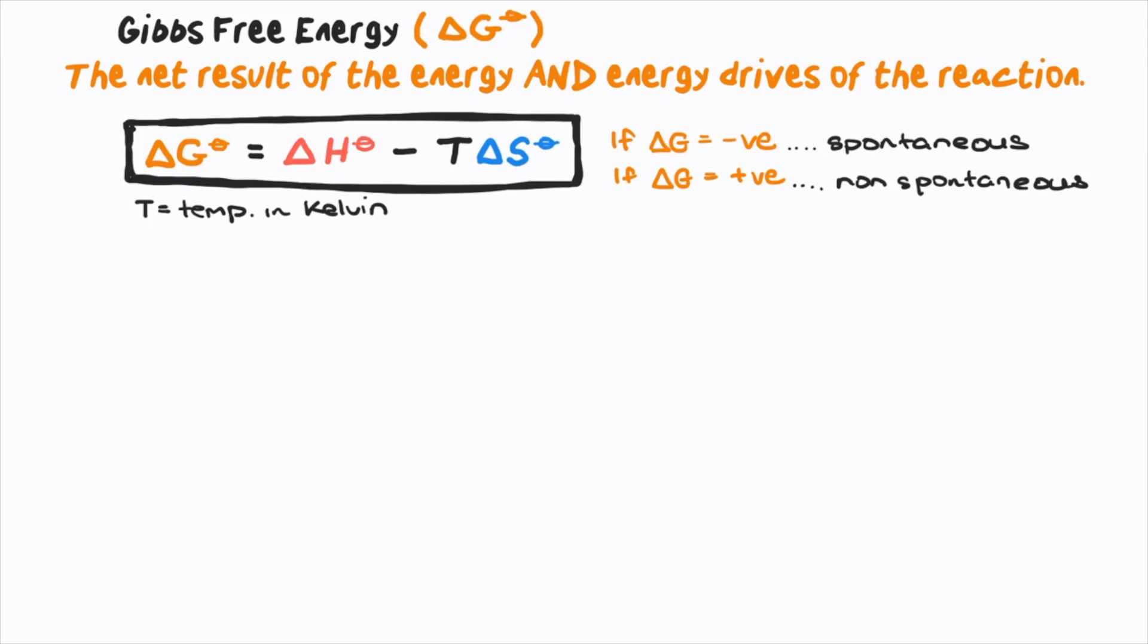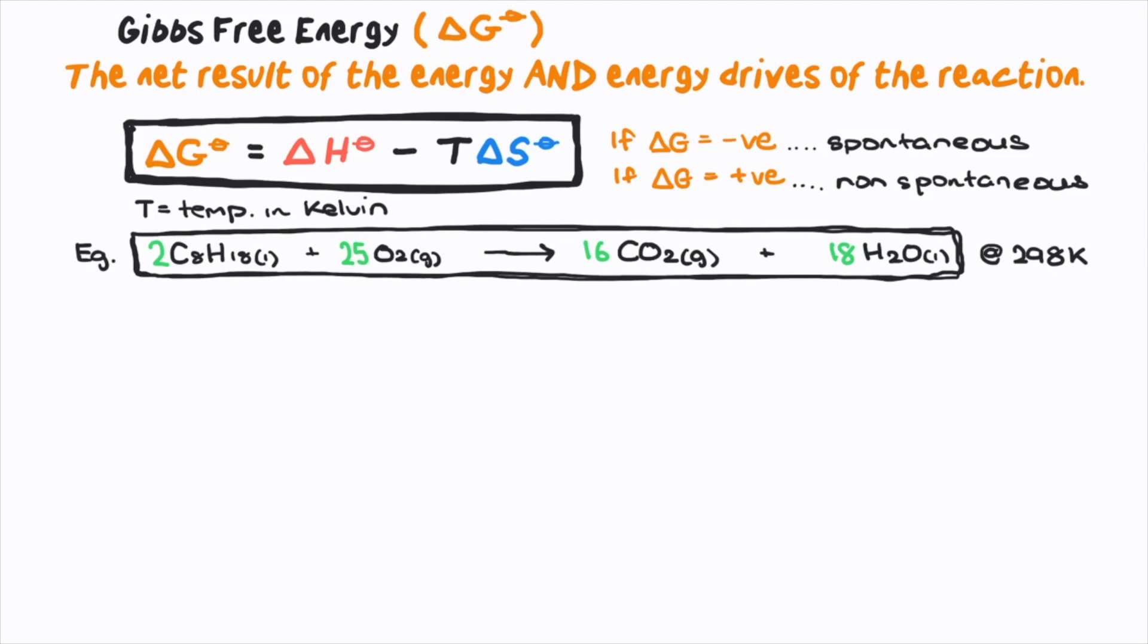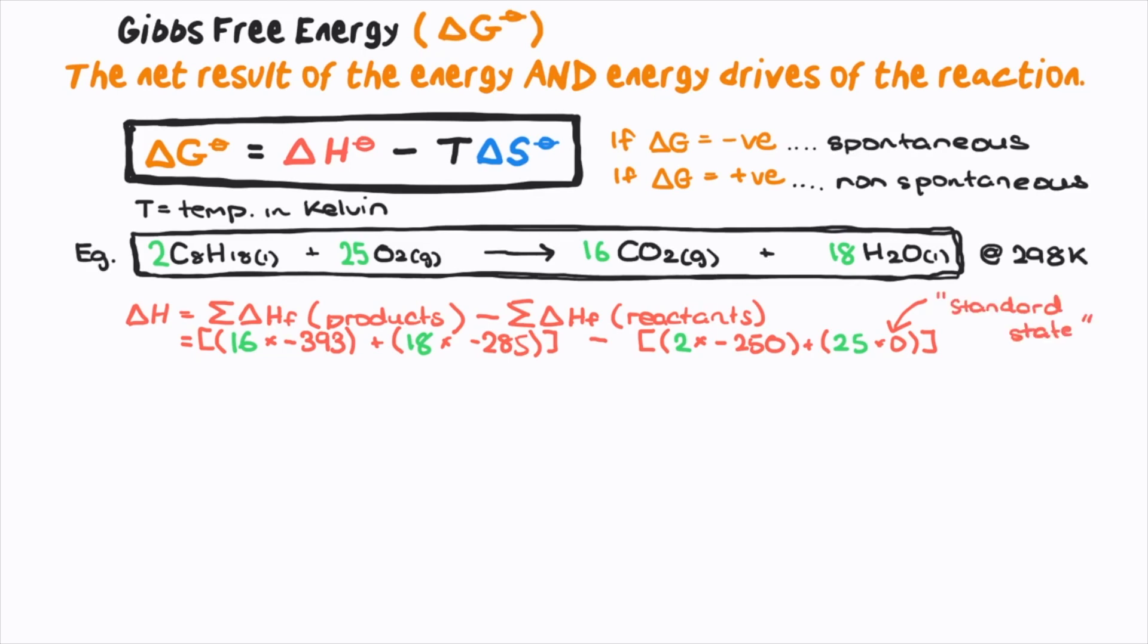Take a look at this example. Is the complete combustion of octane spontaneous at 298 Kelvin? Here's the chemical formula. Delta H can be calculated using the sum of enthalpy formation of products minus reactants. So these are the values. Notice oxygen is zero because it's already in its standard state. This gives negative 16043 kilojoules per mole.